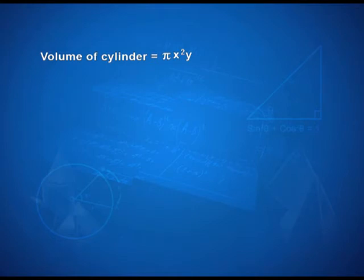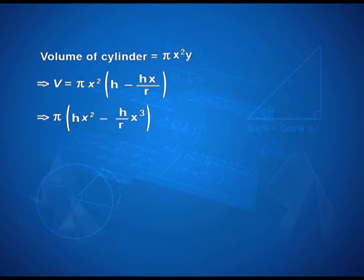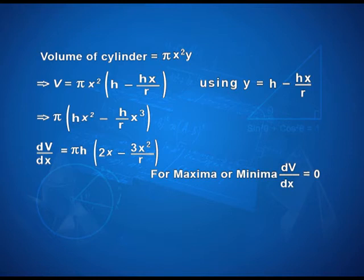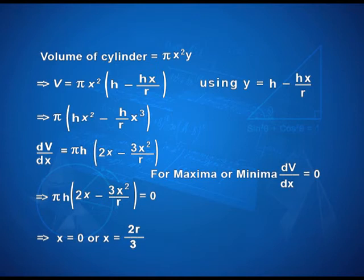Volume of cylinder is nothing but π r² times the height. So, in this case, it is πx²y. Replacing y in terms of x using what we derived earlier, I get a function as π times hx² minus h/r x³. This is a function which we need to now maximize. So, now the procedure is mechanical. Find the derivative, put it equal to 0 for maxima or minima.